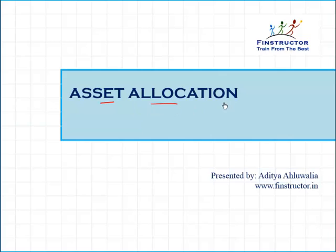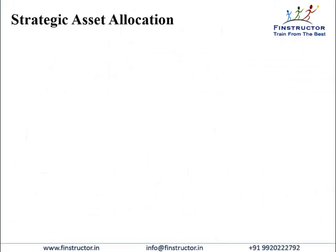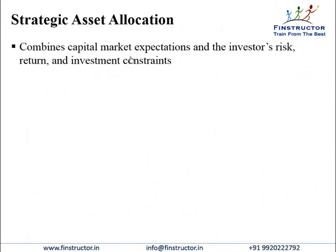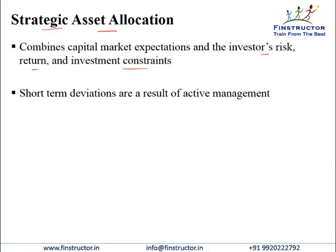Asset allocation broadly speaking is fixing how much debt, how much equity, how much venture capital — what percentage of different broad asset classes to keep in the portfolio. We are not talking about picking specific stocks or bonds, but giving a broader allocation. This combines capital market expectations with the investor's risk, return, and investment constraints. This is called the strategic asset allocation or the target weights for the investor. Short-term deviations may happen from the long-term allocation, but these will be a result of active management and should normally give excess return.